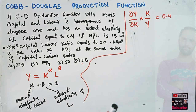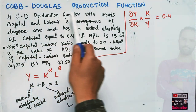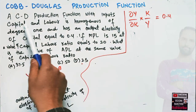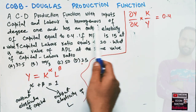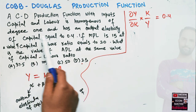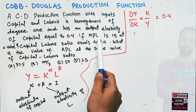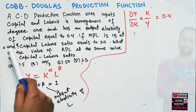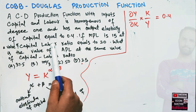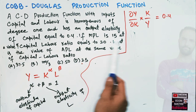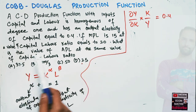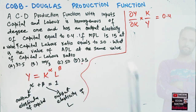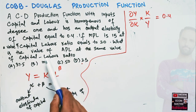In this video we will solve a problem on the Cobb-Douglas production function. The question is: a Cobb-Douglas production function with inputs capital and labor is homogeneous of degree 1 and has an output elasticity of capital equal to 0.4. If the marginal product of labor is 15 at a capital-labor ratio of 20, what is the average product of labor? The options are 37.5, 350, or 25.